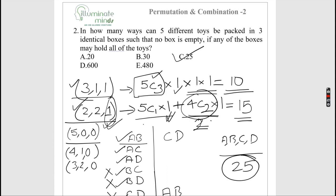Different toys are to be packed in three identical boxes such that no box is empty. Using set-7 distribution theory, the five possible distributions are 3-1-1, 2-2-1, 5-0-0, 4-1-0, and 3-2-0. The last three are eliminated since no box can be empty. For the 3-1-1 case, we choose which three toys go together: that's 5C3 = 10 ways, and the box can be selected in only one way since all boxes are identical.